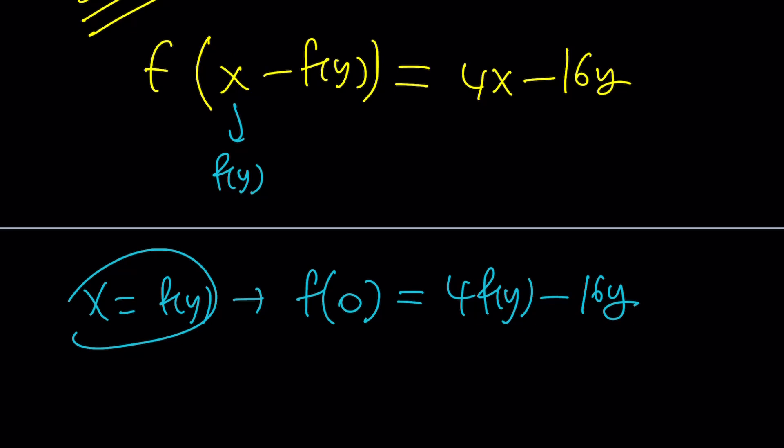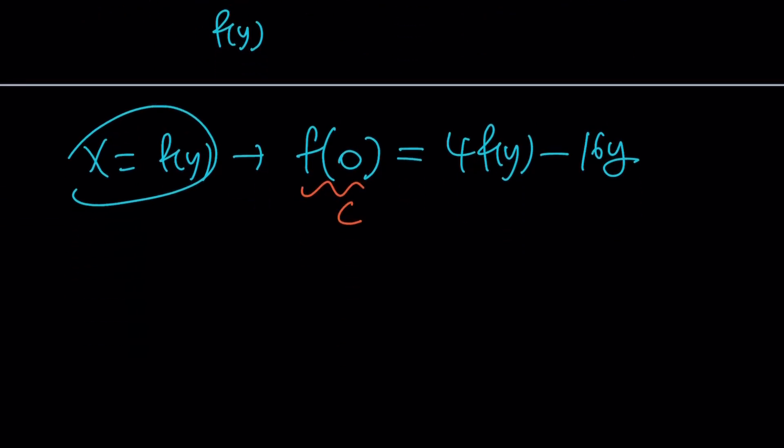So, what do you make of this? f(0) is a constant, you said. So, let's go ahead and call it c. And then, we're going to get the following. 4f(y) - 16y is equal to c. Great.